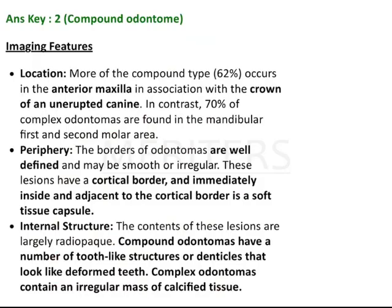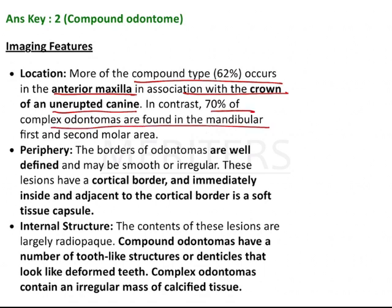Regarding imaging features and location, the compound type occurs more in the anterior maxilla, often with the crown of an unerupted canine. About 70% of complex odontomas occur in the mandibular first and second molar area. The major contrast is compound in the maxilla and complex in the posterior mandible.